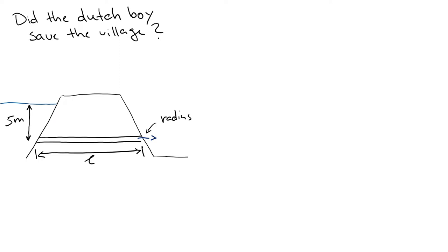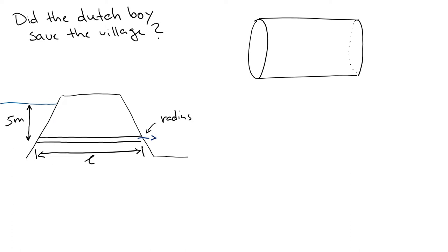The flow of water through this kind of system can be described with what is called the Hagen-Poiseuille law, which describes flow through a cylindrical pipe. This is a snapshot of our little conduit going through the dike — a perfect cylinder through which water is going to flow, with a radius r and a length L, just like our conduit in the dike.